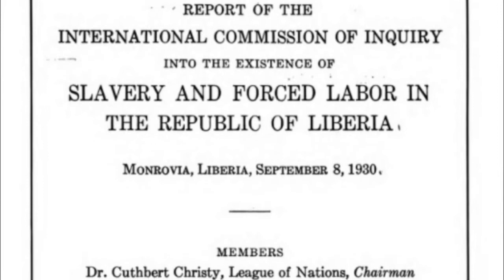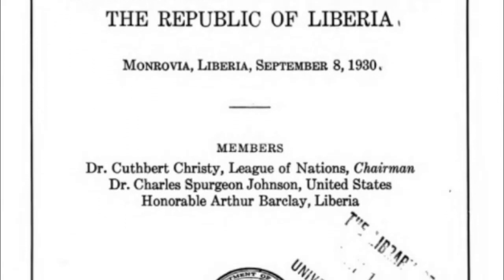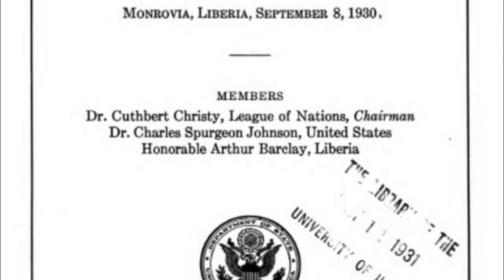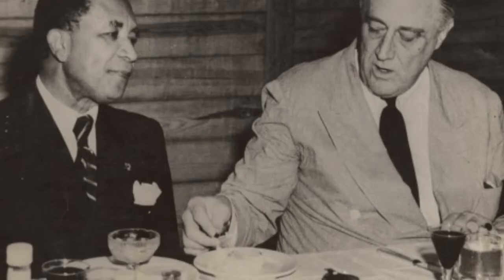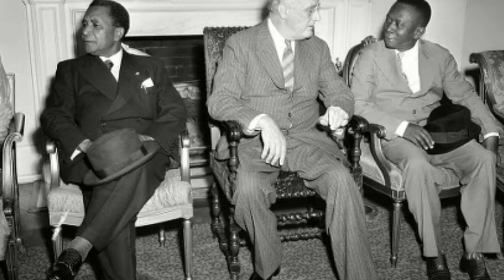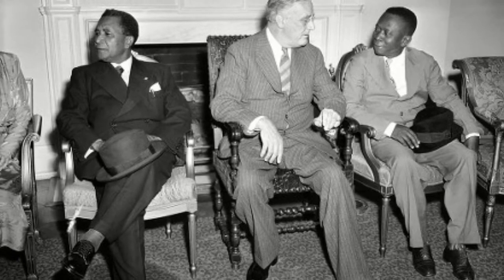The report also called the election into question, saying that the country represents the paradox of being, quote, a republic of 12,000 citizens with one million subjects. Edwin Barclay, who was vice president at the time, replaced King after he resigned in 1930. He ran against Faulkner in the 1931 federal election, and the True Whig Party won again. Despite this scandal, among many others, the True Whig Party managed to rule the country from 1878 to 1980 — more than a century.